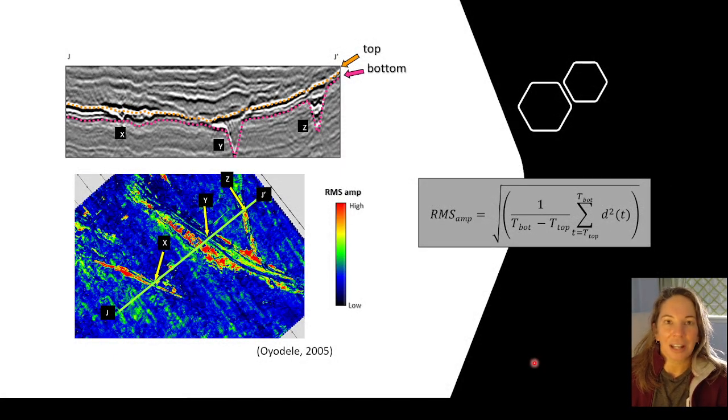So when we look at it, we use it a lot of times for reservoir characterization. It could help us with some structural mapping. And so the equation of it is pretty straightforward. The way it's calculated, we take a window of samples. So again, you got to think about the parameters so you can window differently if you want to.